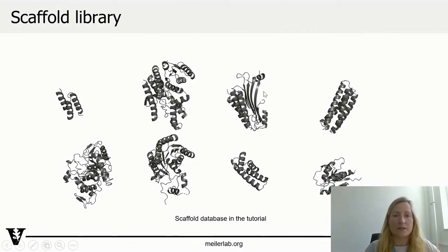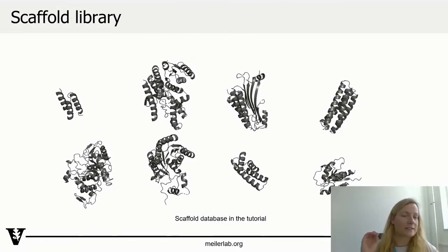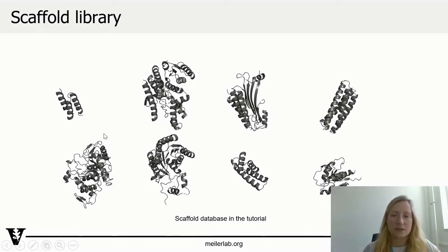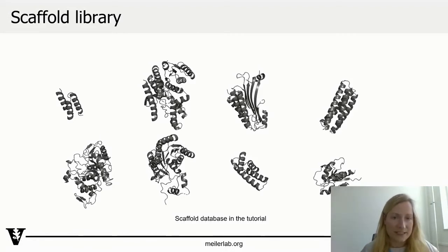This is how a scaffold library looks — this is from the tutorial. As you've already seen, the motif is on a helical stretch, so it's most likely to be transplanted onto a helical scaffold protein, and you find a selection of these in our scaffold library.